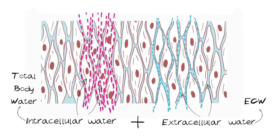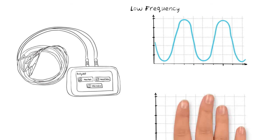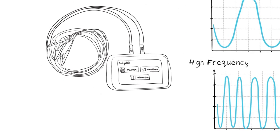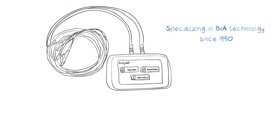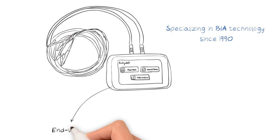Bodystat products range from single frequency to multi-frequency to the latest in spectroscopy technology, providing a range of fluid and body composition data. Bodystat has been specializing in BIA technology since 1990, continually developing top-of-the-range BIA products designed for end-users and researchers alike.